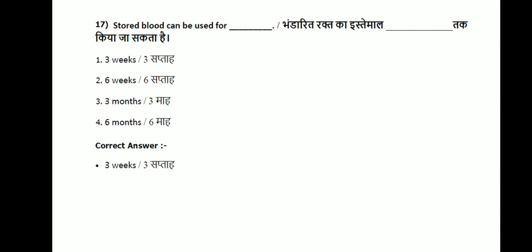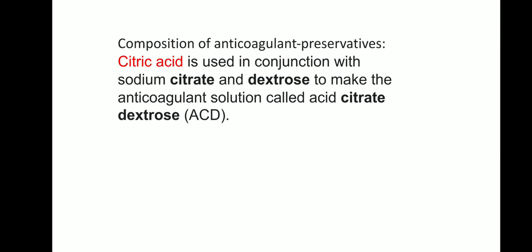Question 17: stored blood can be used for how long? Options are three weeks, six weeks, three months, or six months. The correct answer is three weeks, that is 21 days. In blood banks, anticoagulant preservatives are used. Citric acid is used in conjunction with sodium citrate and dextrose to make an anticoagulant solution called acid citrate dextrose (ACD).